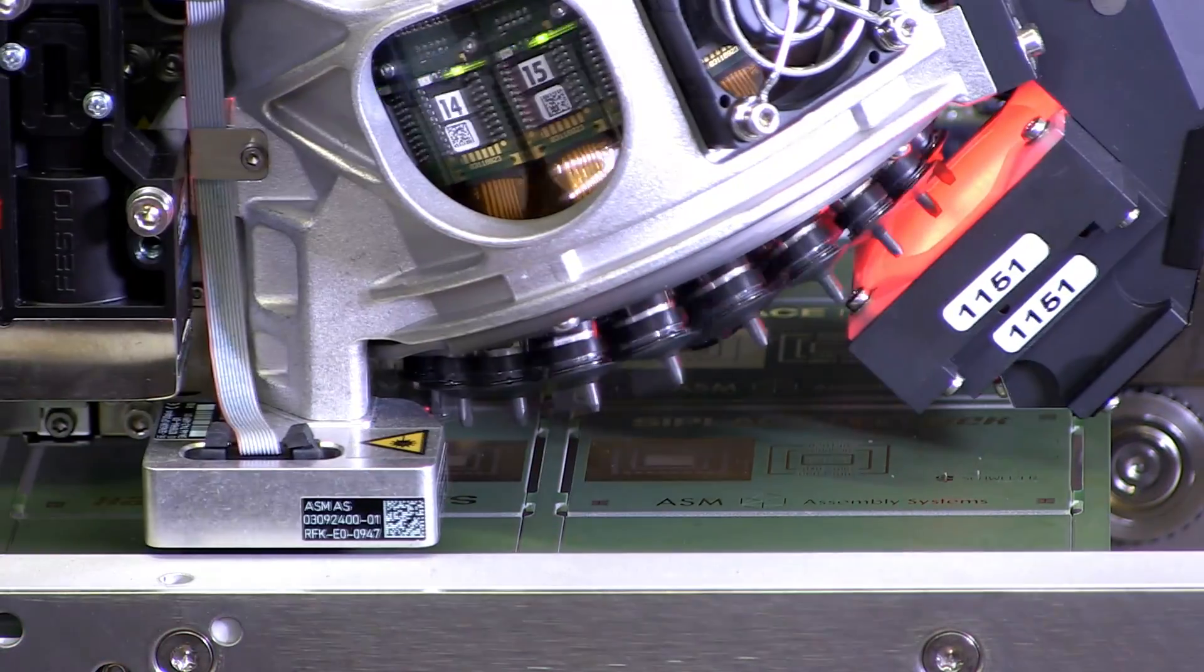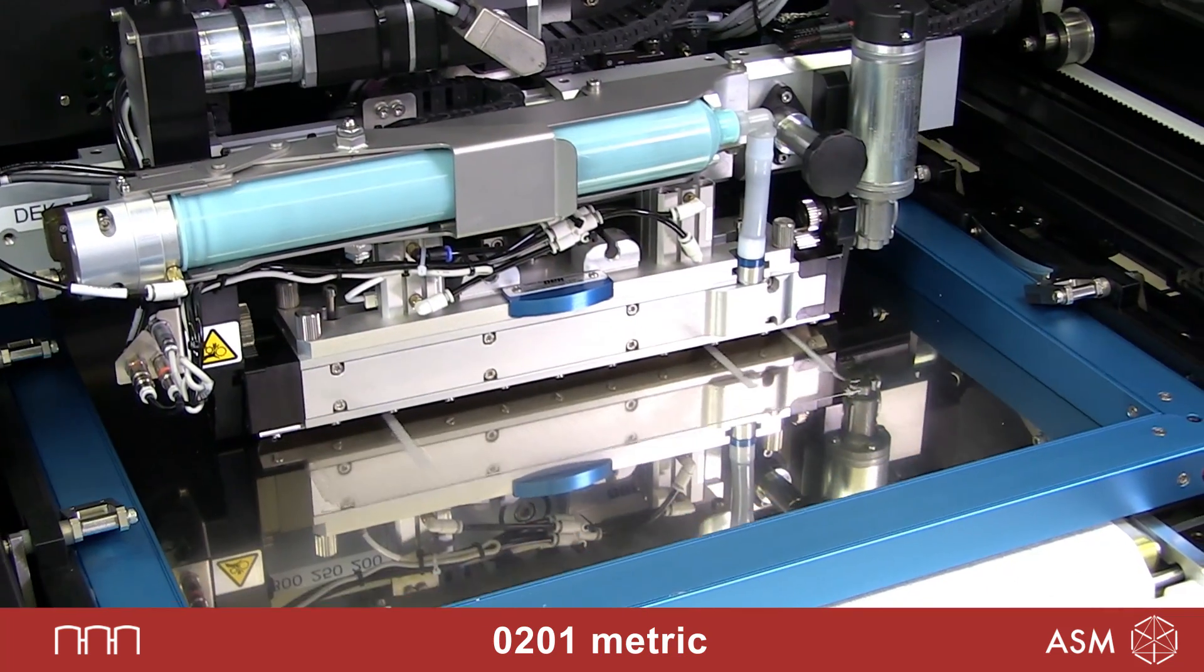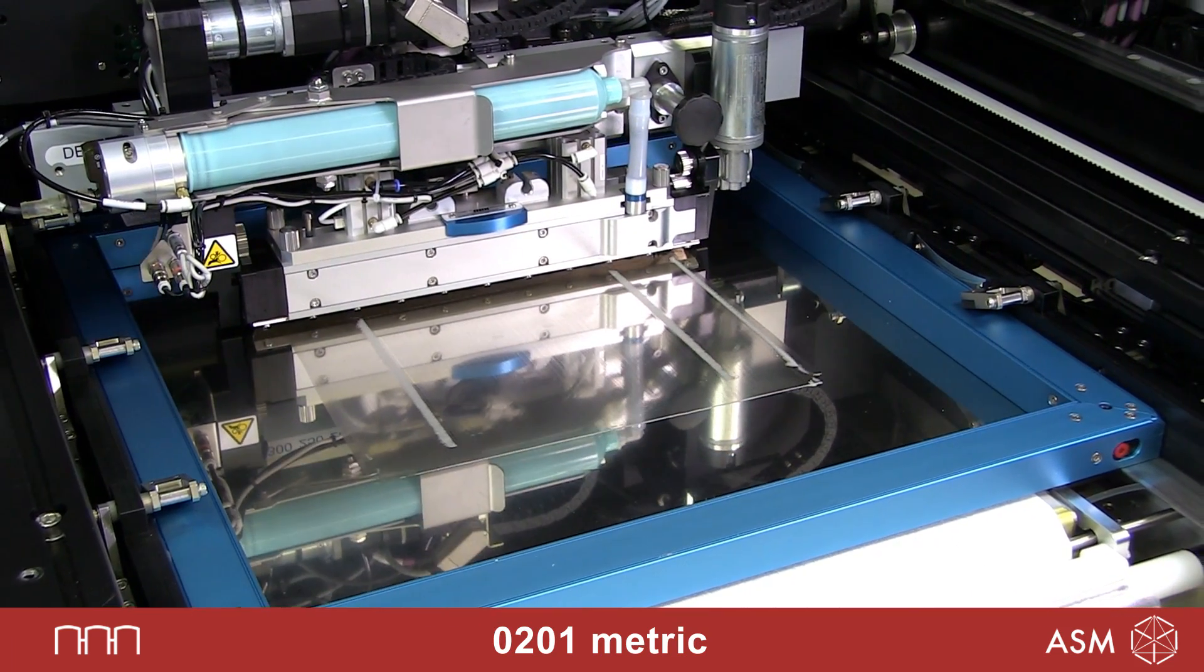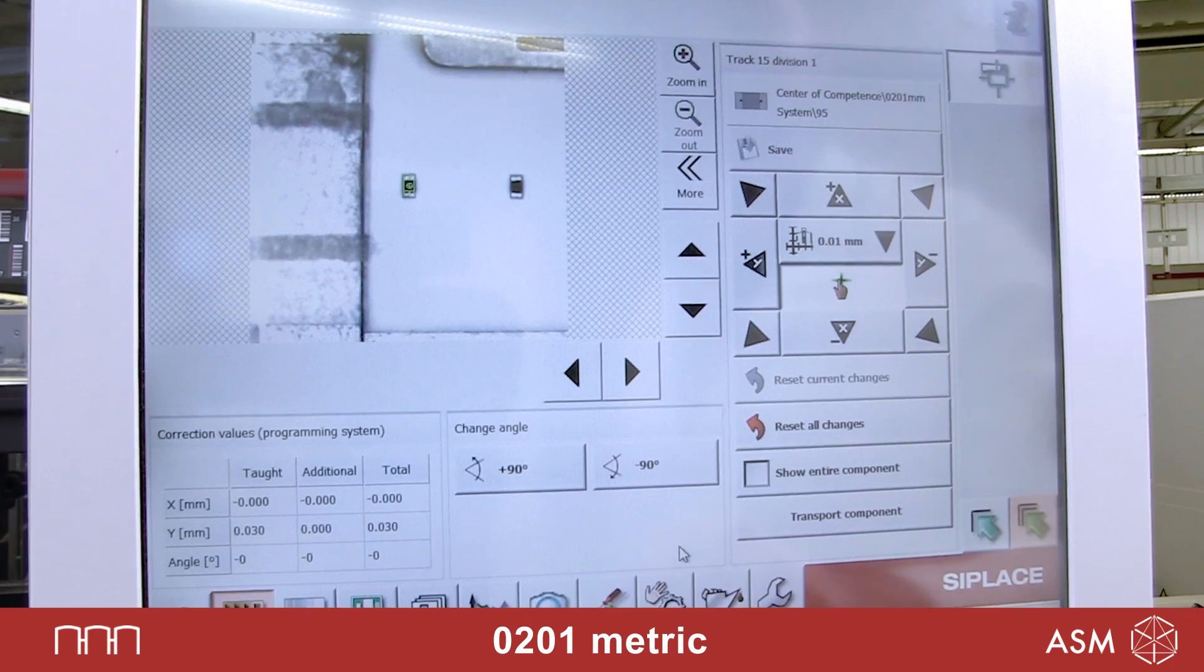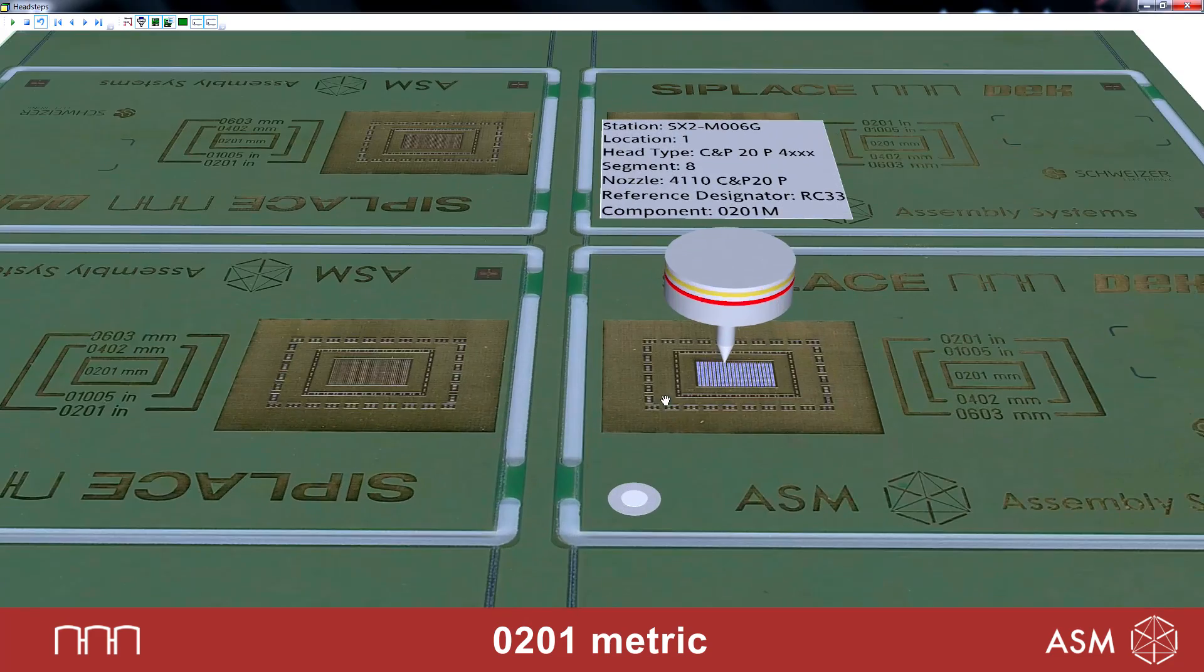Technology leader ASM will also be by your side when you need to implement metric 0201 processes. Today's C-Place placement machines and DEC printers are ready to handle the special requirements involved in the placement of these super-small components.